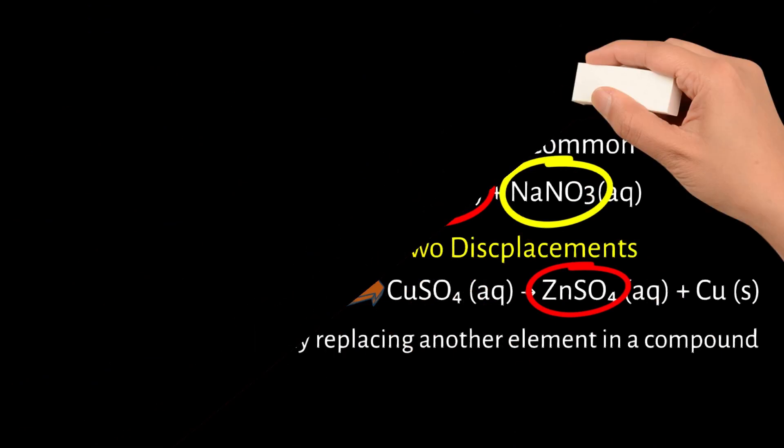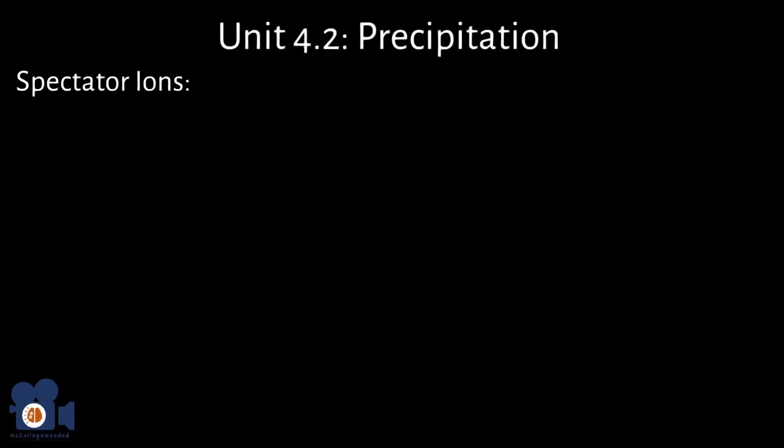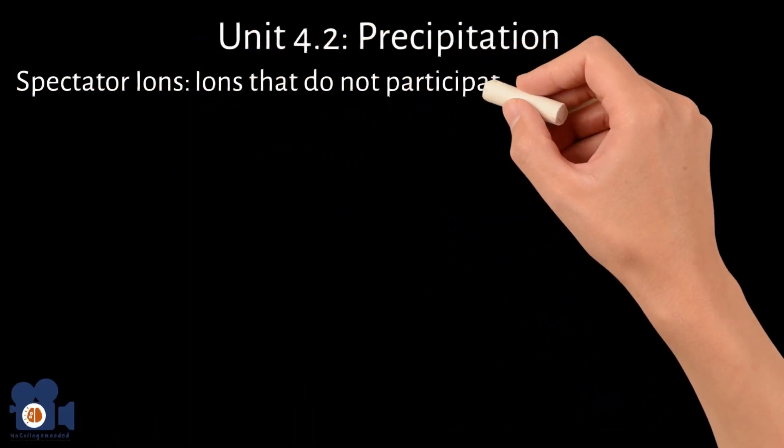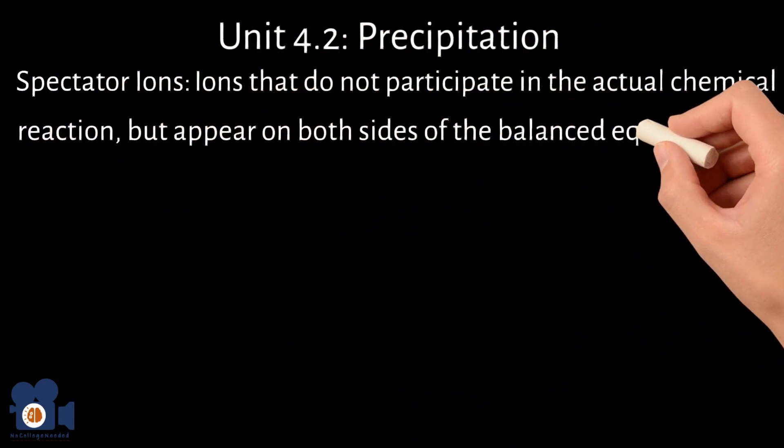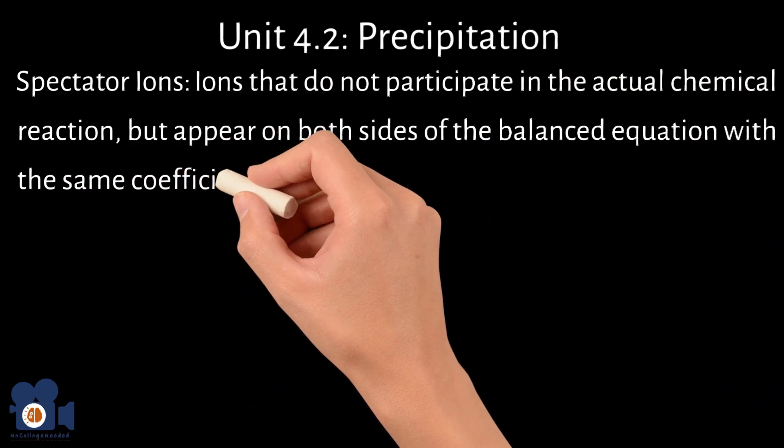There is one other term to know, which is spectator ions. They are ions that do not participate in the actual chemical reaction but appear on both sides of the balanced equation with the same coefficients.